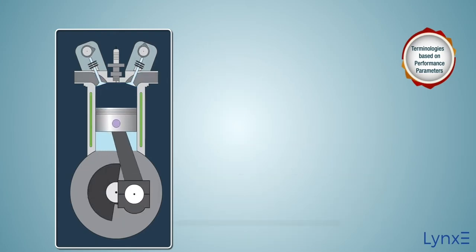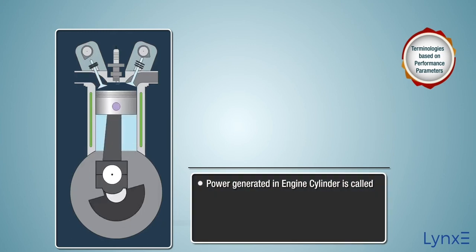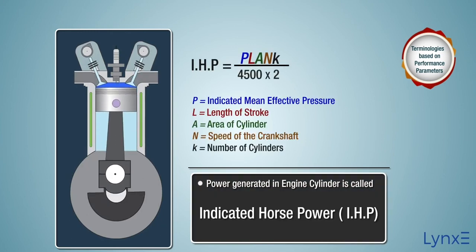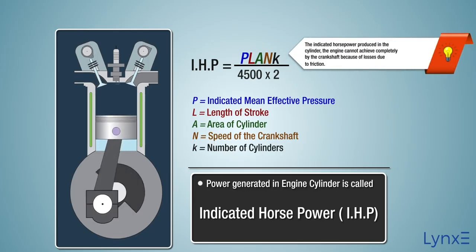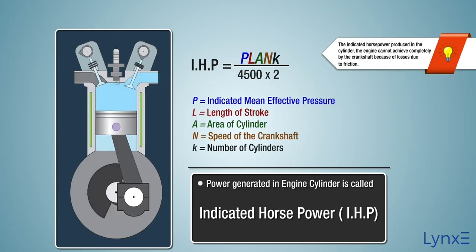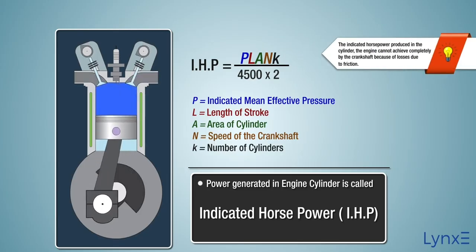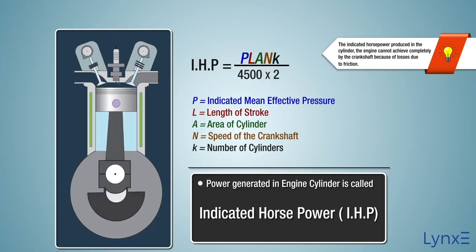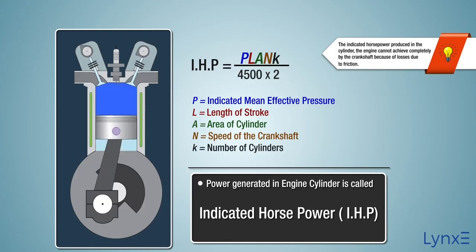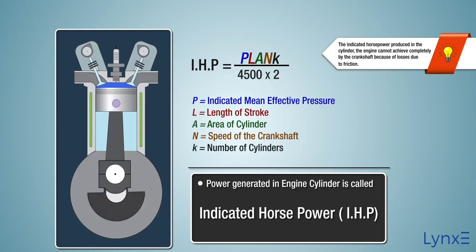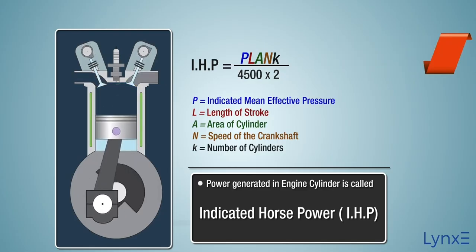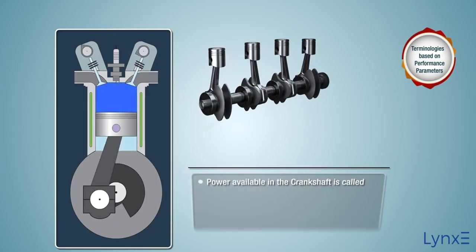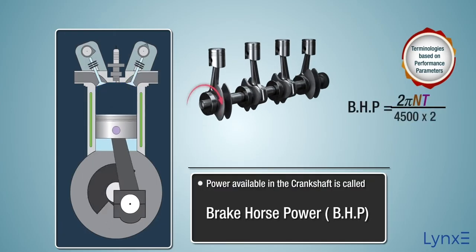The power actually developed in the engine cylinder is called indicated horsepower. However, the engine cannot deliver this power completely at the crankshaft, due to losses from friction. The horsepower available at the crankshaft is known as brake horsepower.